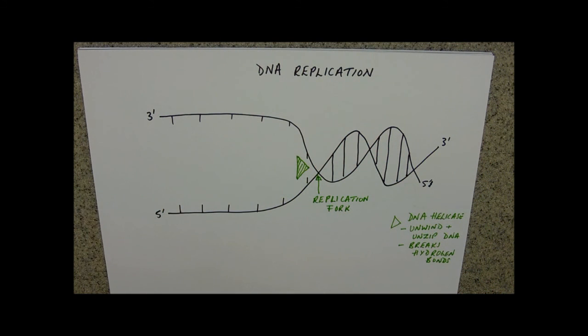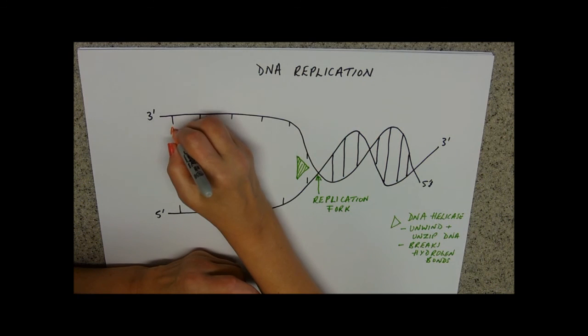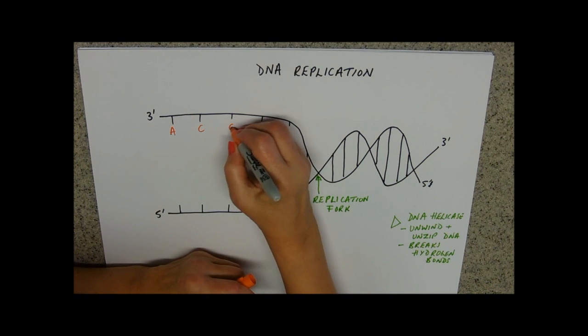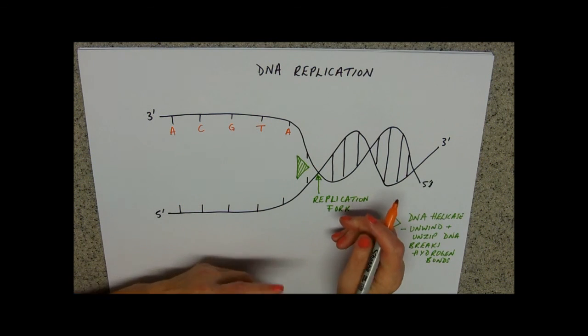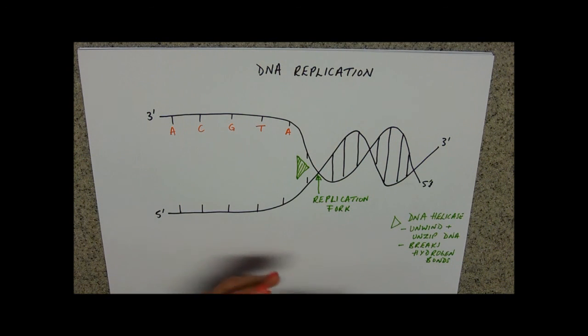And there are primers as well. I'm just going to put some bases in randomly. So I'll have A, C, G and T and A there, and remember that we've got these three prime and five prime ends.